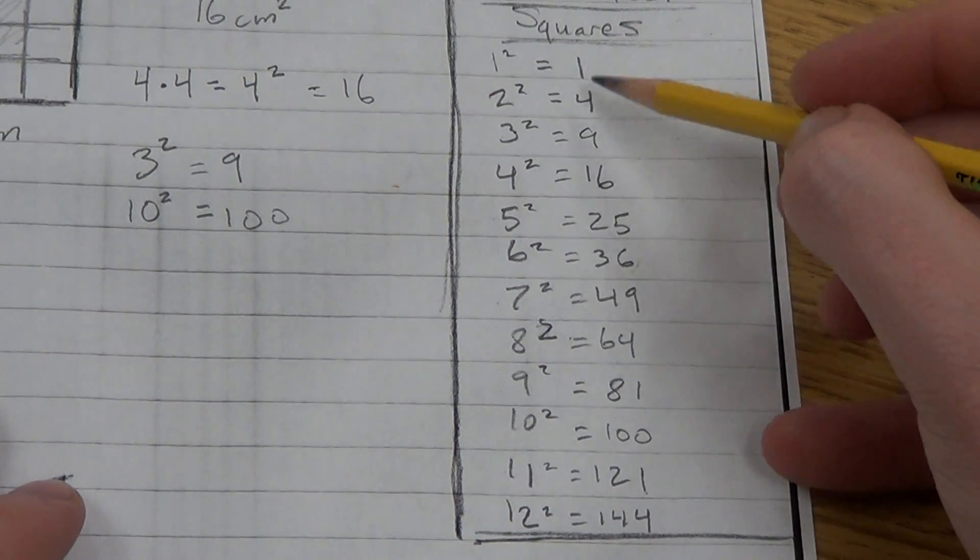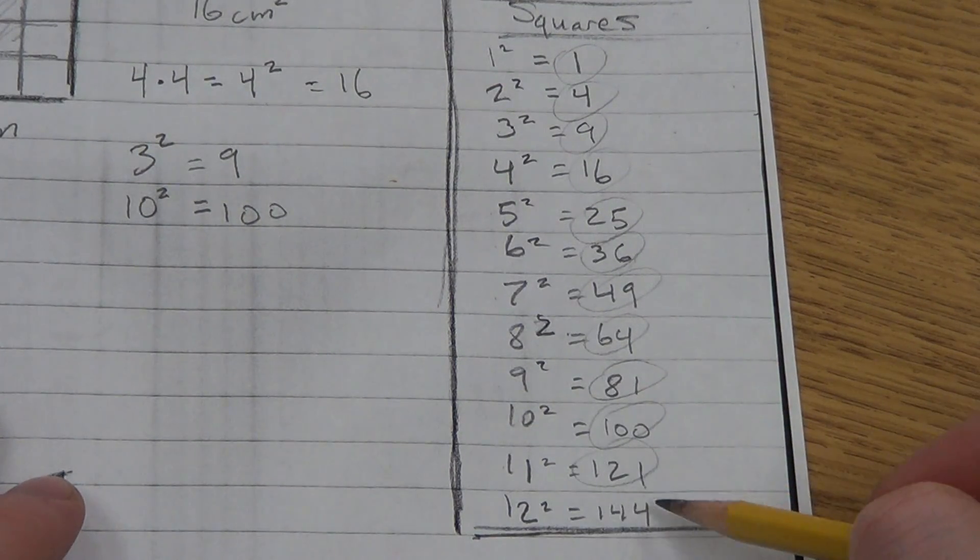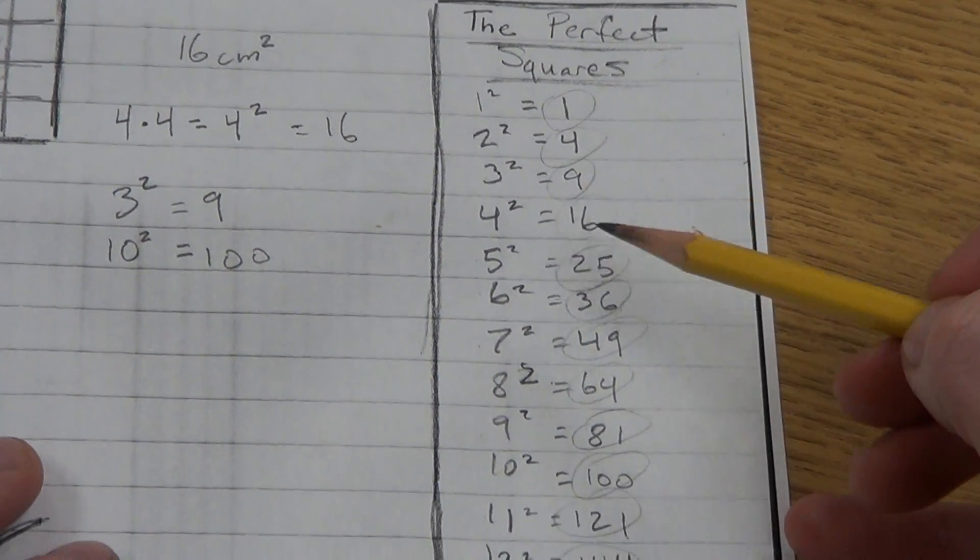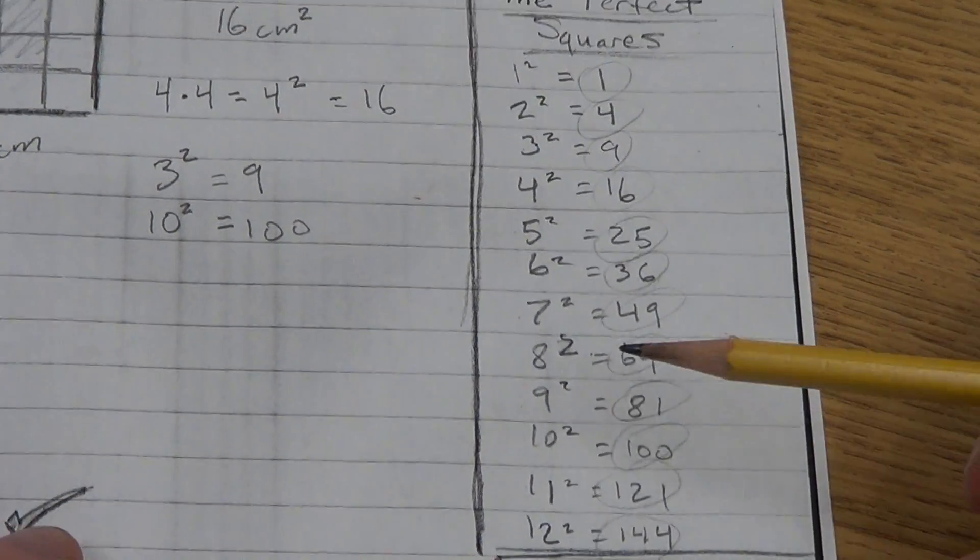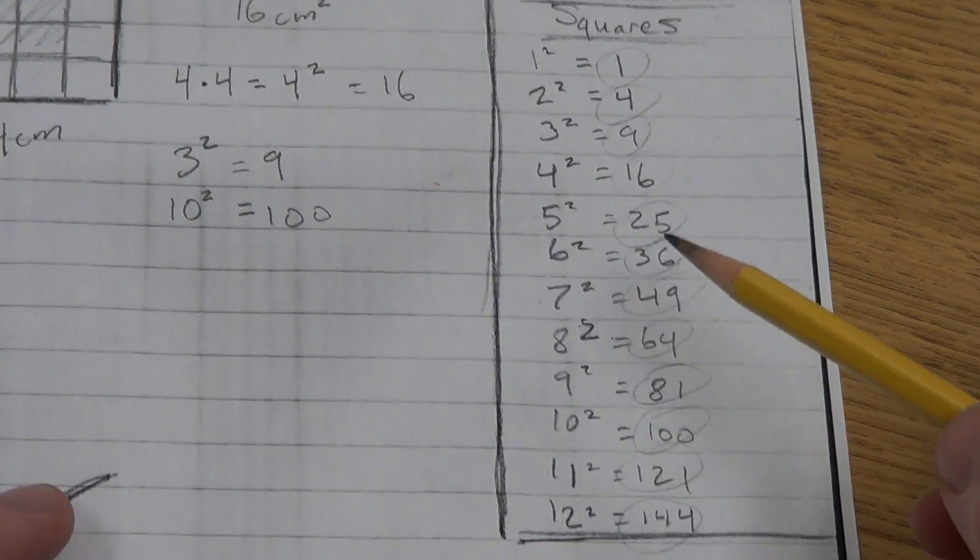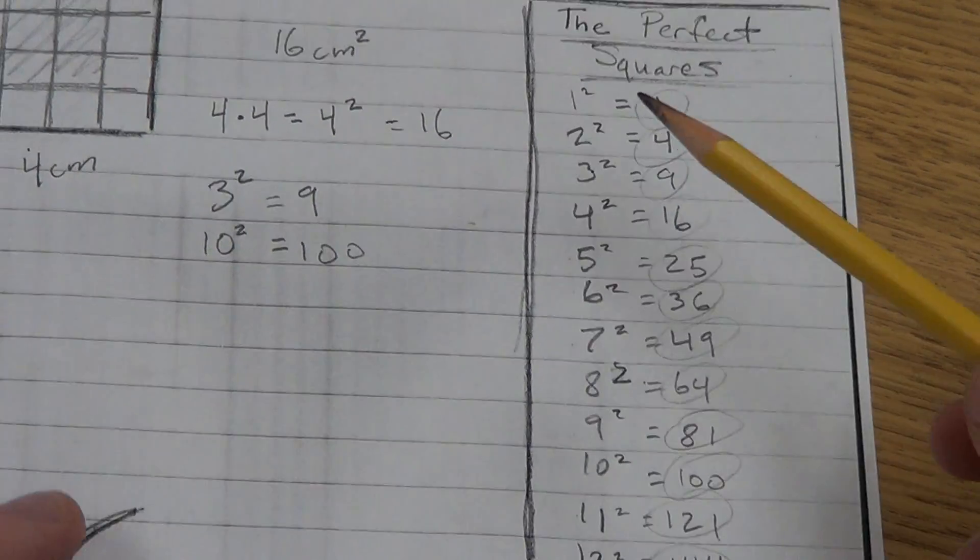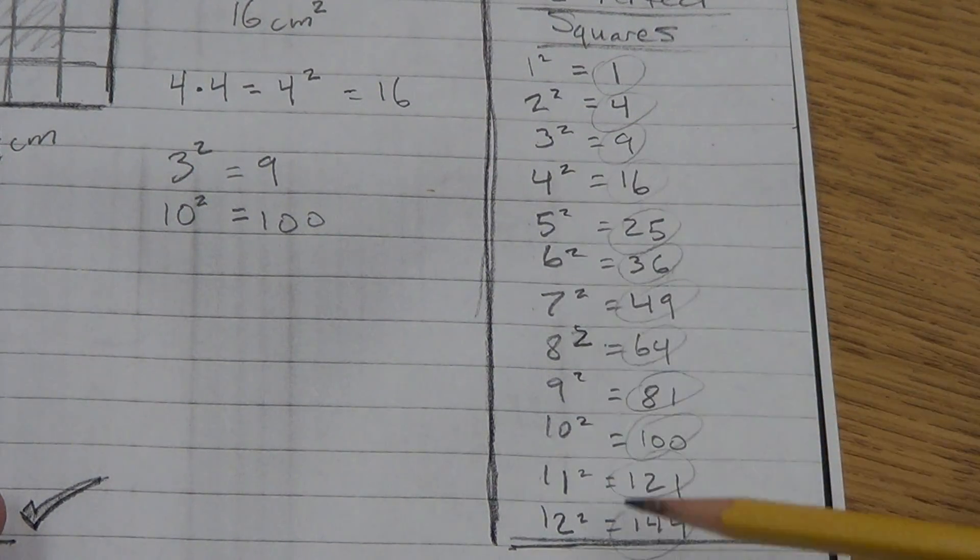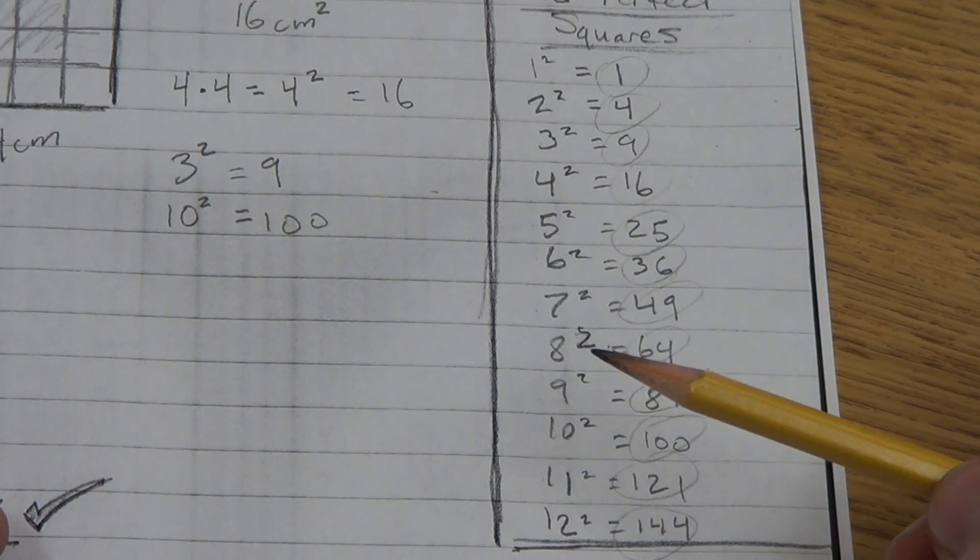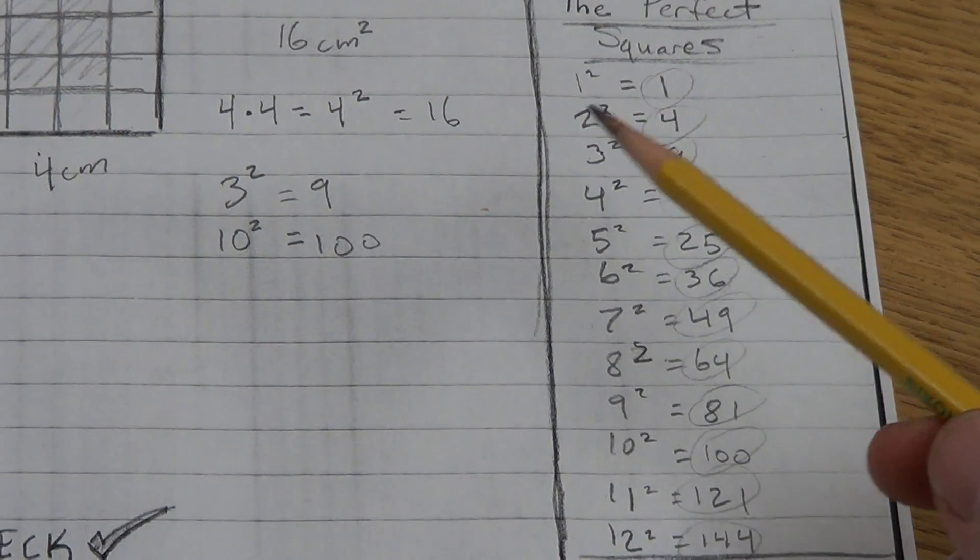Now, these numbers over here, the 1, 4, 9, 16, 25, 36, 49, 64, 81, 100, 121, and 144 are all called perfect squares. These numbers represent whole numbers that have been squared. Again, multiplied by themselves, 3 times 3, 4 times 4, etc. Knowing these perfect squares can really make your life easier. You should definitely at least know up to 12 squared, 144, because these should already be in your multiplication anyway. You should be able to do those without a calculator.